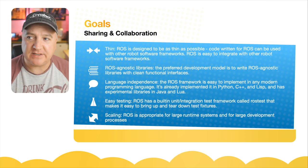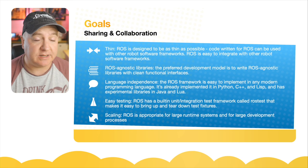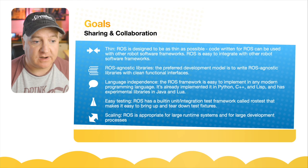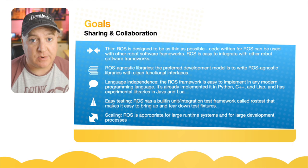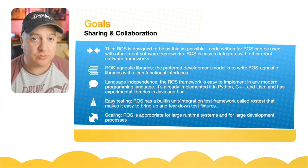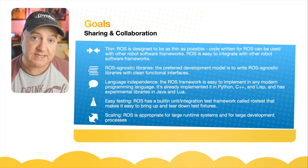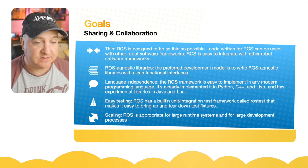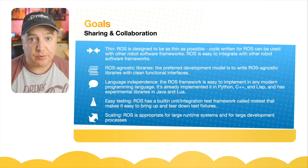ROS-agnostic libraries are preferred - clean functional interfaces so code can be used with other robotic frameworks. There's language independence: ROS isn't tied to a specific language; implementations exist for Python, C++, Lisp, and experimental libraries for Java and Lua. It's also designed to be easy to test - you can record messages sent between nodes into something called a bag and play them back. This means you don't have to keep putting your robot in the exact same scenario - you record once and test different algorithms later. ROS is appropriate for very large systems as well as quite small ones.